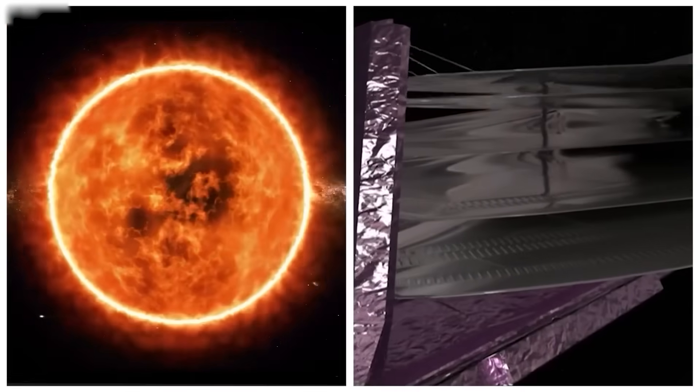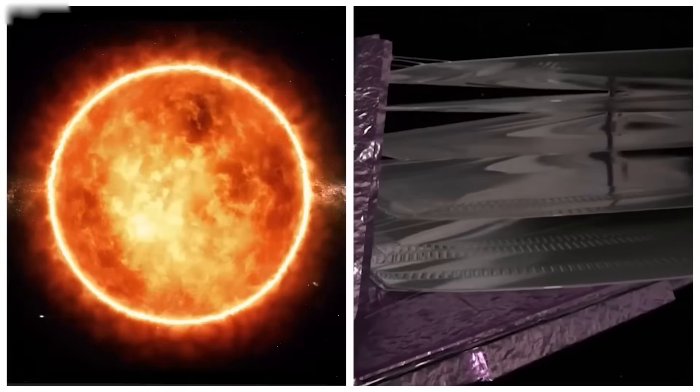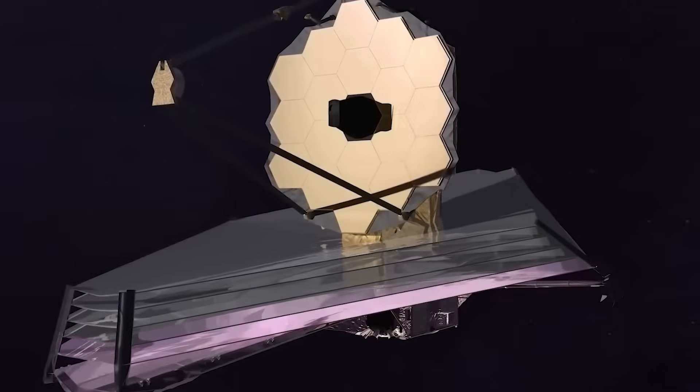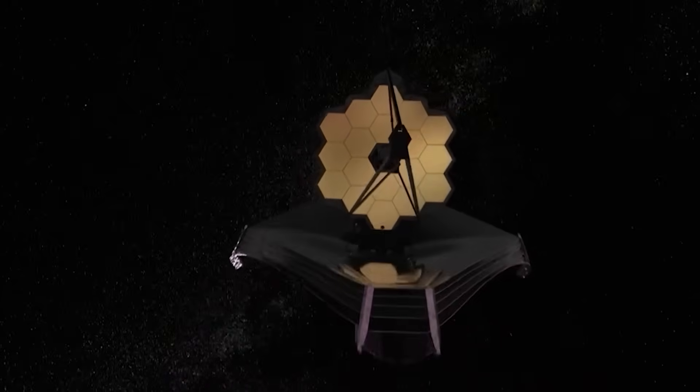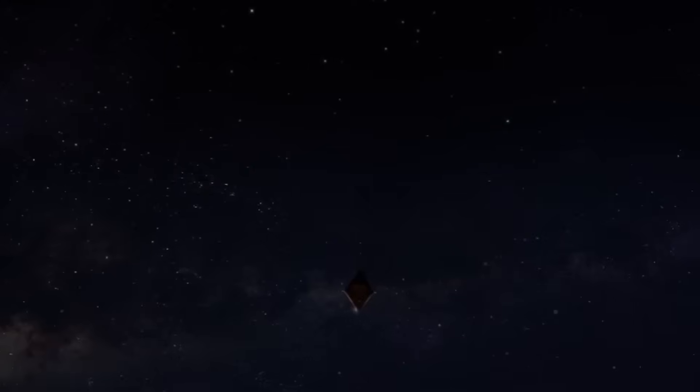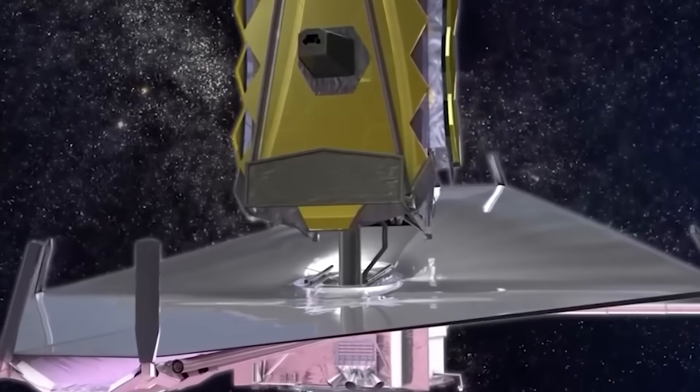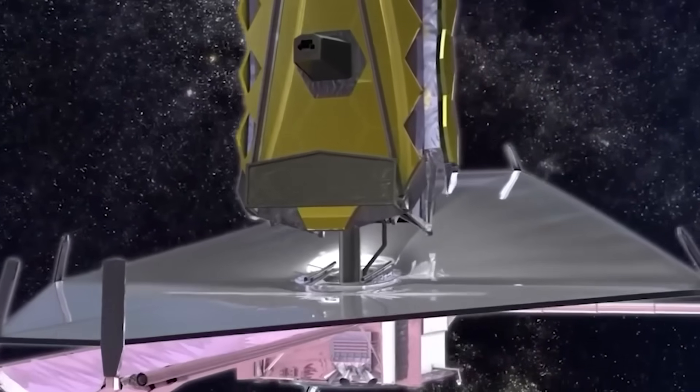JWST's ability to capture TWA-7b in infrared sets a new standard. We're talking about a leap from inference to image, from probability to proof. And this is just the beginning. If Webb can do this with one planet, soon it could be doing the same with many more, potentially even Earth-like ones.